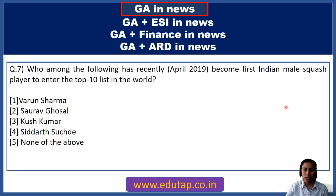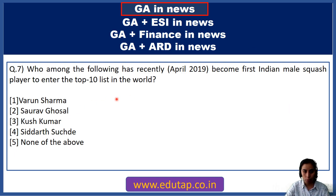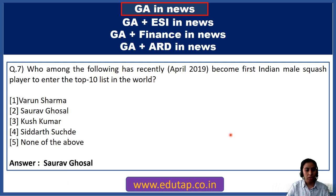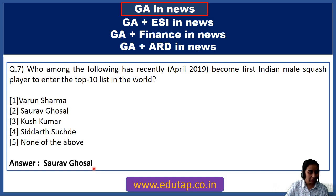Question 7: Who among the following has become the first Indian male squash player to enter the top 10 list in the world? Options are Varun Sharma, Saurav Ghoshal, Kush Kumar, Siddharth Suchde, or none. The answer is Saurav Ghoshal. He is a squash player and for the first time an Indian male has entered the top 10 list in the world.